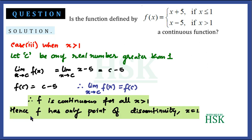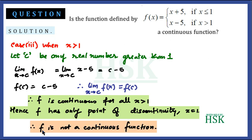We have seen that the function is only discontinuous at x = 1. So f has only one point of discontinuity, that is x = 1, and we can say that f is not a continuous function.